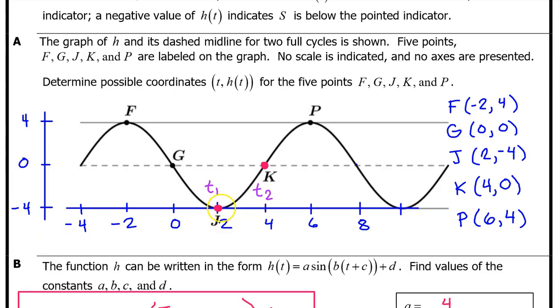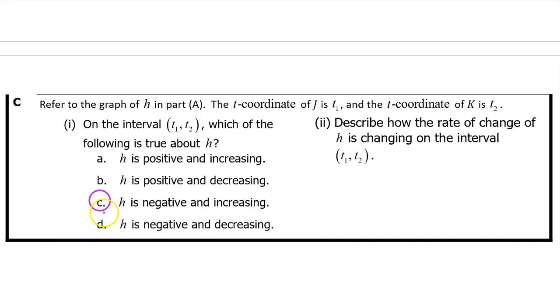We see that H of T is increasing from T1 to T2 because the output values are rising from left to right. Next, we must decide if H of T is positive or negative on this interval. Well, just look at our vertical scale. The output values are between 0 and negative 4. These are all negative values. So, H of T is negative and increasing on the interval from T1 to T2. So the answer is C.